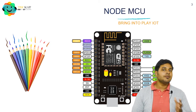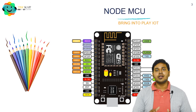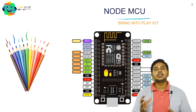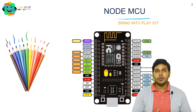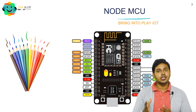In the top left corner you will see a pin labeled A0. It is an analog pin, and we can use it for ADC — that is, the Analog to Digital Converter.